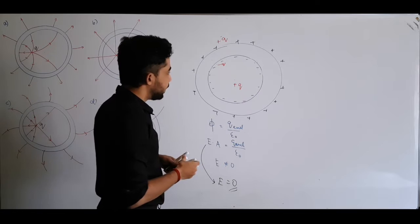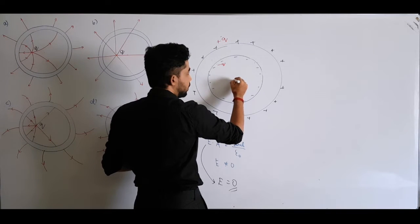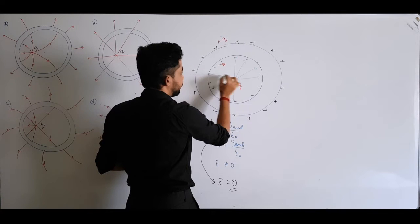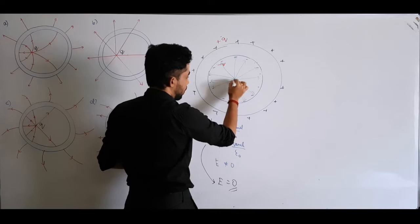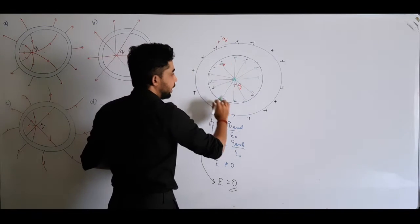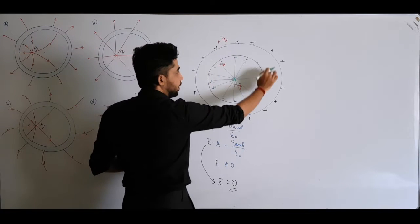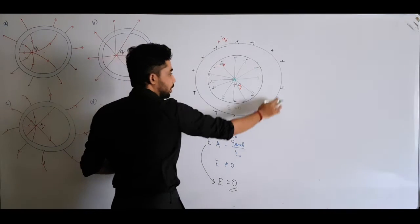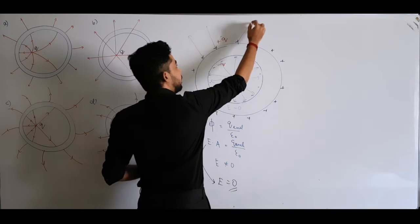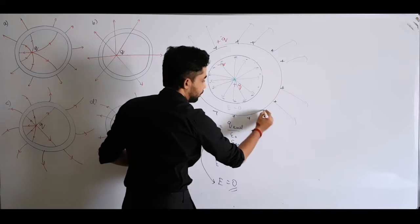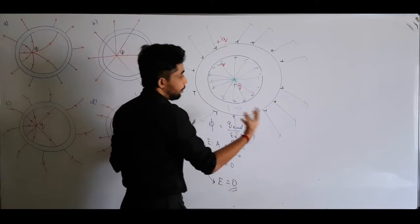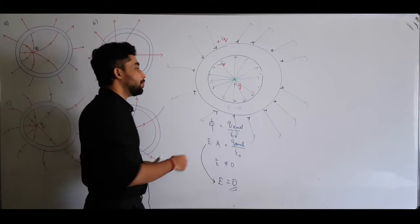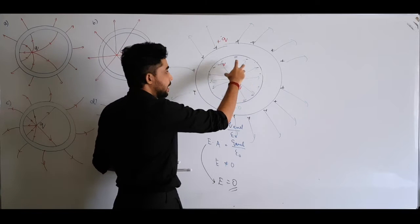The electric field starts from positive charges and ends at negative charges. Inside the cavity, field lines go from the plus Q charge to the minus Q on the inner surface. There is no electric field within the conducting shell itself. Outside, the field lines start from the positive charges on the outer surface and go radially outward to infinity. If you place another charge outside the shell, that pattern may vary.